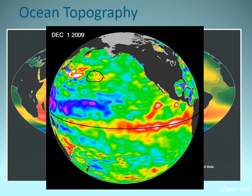Another example is El Niño — this is showing an El Niño where we have warmer than average waters in the eastern and central Pacific. Warmer water will expand just a little bit and create higher than normal sea levels.